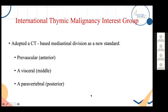The International Thymic Malignancy Interest Group, based on CT scan findings, further divided compartments into pre-vascular, visceral, and paravertebral zones — essentially similar to anterior, middle, and posterior compartments.